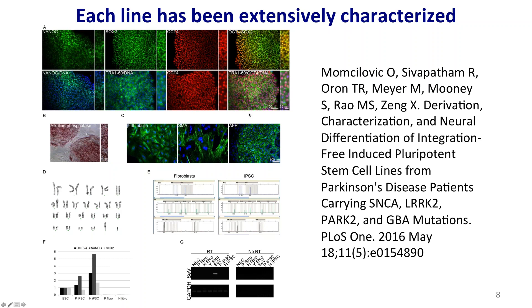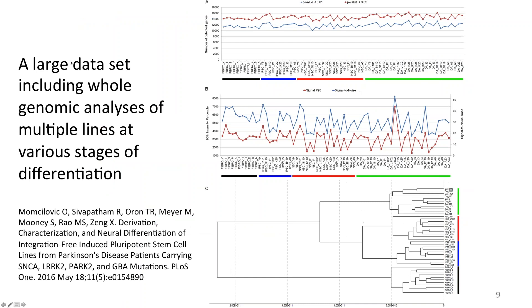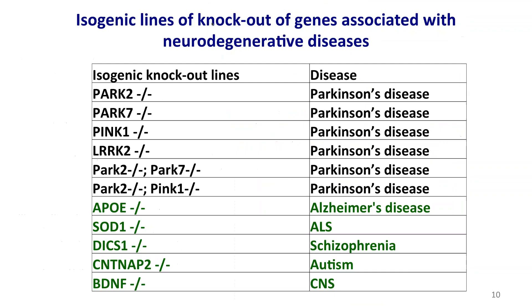In addition to general characterization, we took extra effort to generate a large dataset including whole-genome analysis of multiple lines at various stages of dopaminergic differentiation. I'm not going to ask you to remember all the curves and spectrograms, but I just want you to know these data are all available.